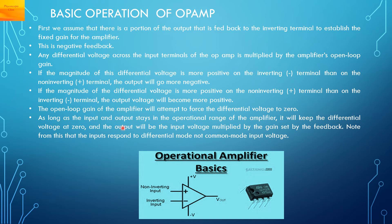As long as the input and output stay in the operational range of the amplifier, it will keep the differential voltage at zero, and the output will be the input voltage multiplied by the gain, which is set by the feedback.